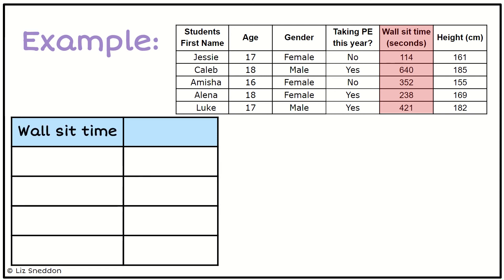I want my wall sit time in one column and the frequency in the other. I need to look at my wall sit times and think, what is the biggest number? The biggest number is 640.